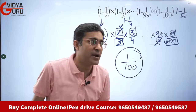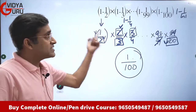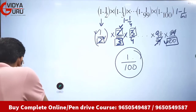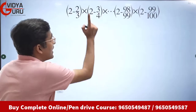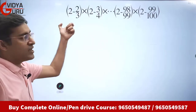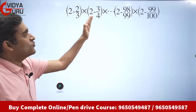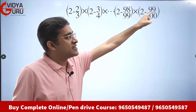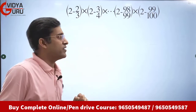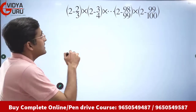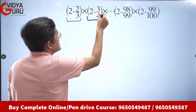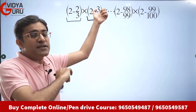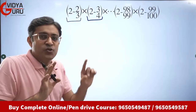Let's look at the next question — difficulty level will increase, so don't go anywhere. The question is: (2 − 2/3) × (2 − 3/4), and such a series continues till (2 − 99/100). First, identify the pattern: the numerator is 1 less than the denominator.